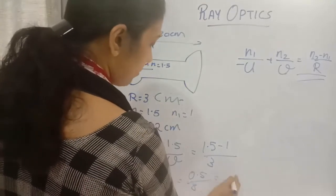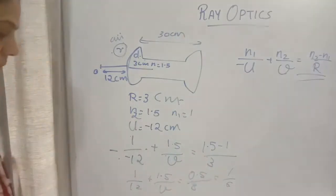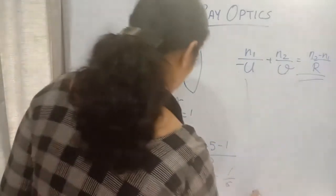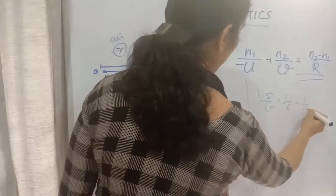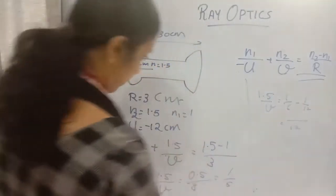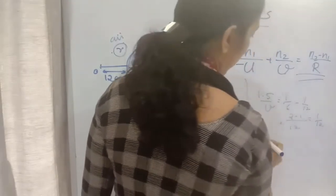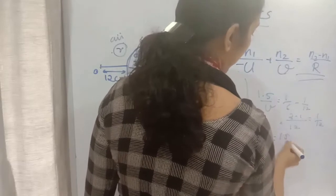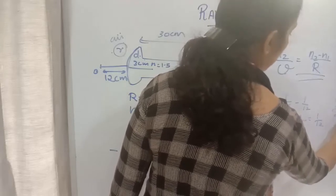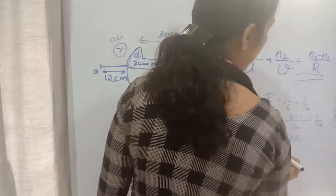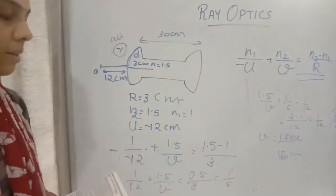0.5 divided by 3 gives 1 by 6. So 1.5 divided by v equals 1 by 6 minus 1 by 12. Taking LCM of 12: 2 minus 1 gives 1 by 12. Therefore v equals 1.5 divided by 1 by 12, which is 12 multiplied by 1.5, giving 18. So the image is formed at a distance of 18 centimeters.